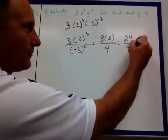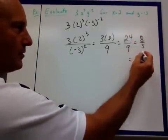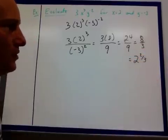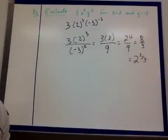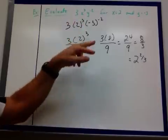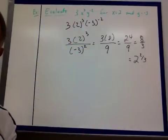8 thirds. You can leave it like that, or 2 goes in there twice with a remainder of 2 - 2 and 2 thirds, and that's it. Remember, anything to the 0 power is 1, and any negative exponent, flip it and make it a positive exponent. We'll look at examples of that tomorrow in class. We'll get after it then. See you.